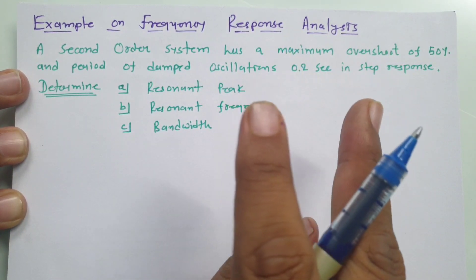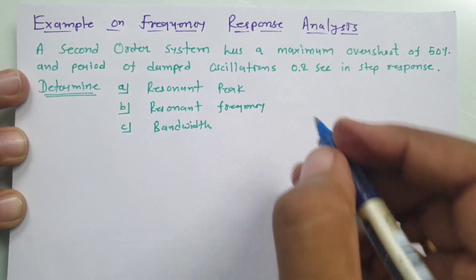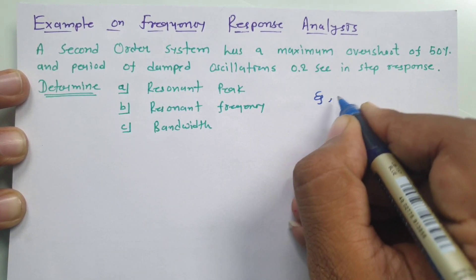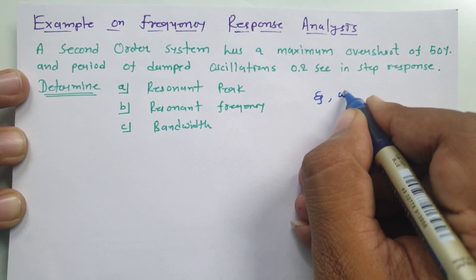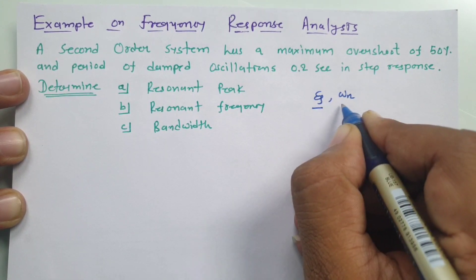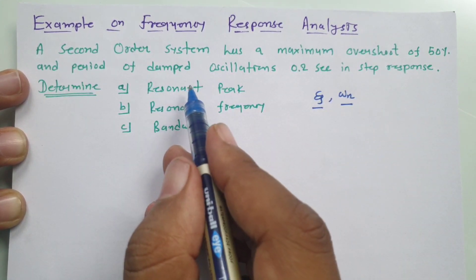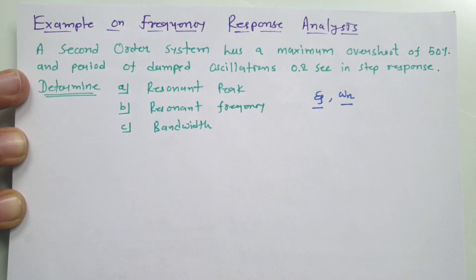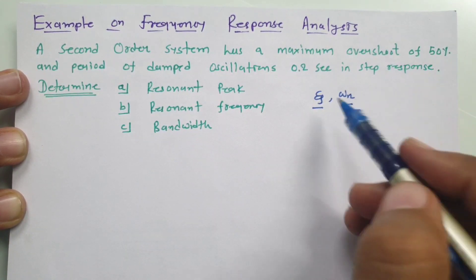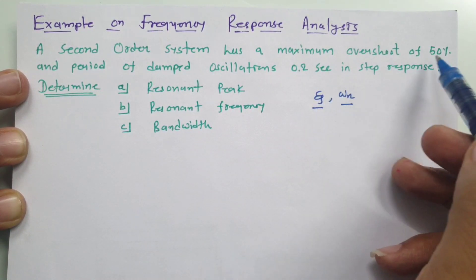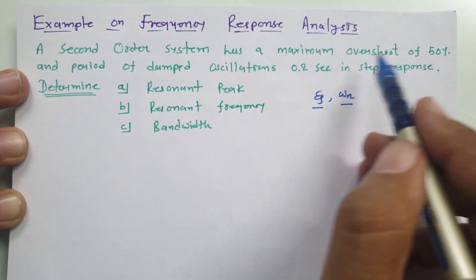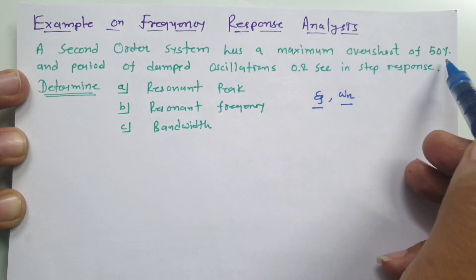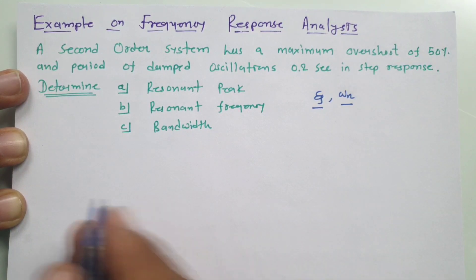To identify the resonant peak, resonant frequency, and bandwidth, two important parameters need to be identified first: zeta (ζ) and omega_n (ωn). If you have these two values, you can directly calculate the required parameters. First, we will identify ζ based on the given maximum overshoot of 50%.